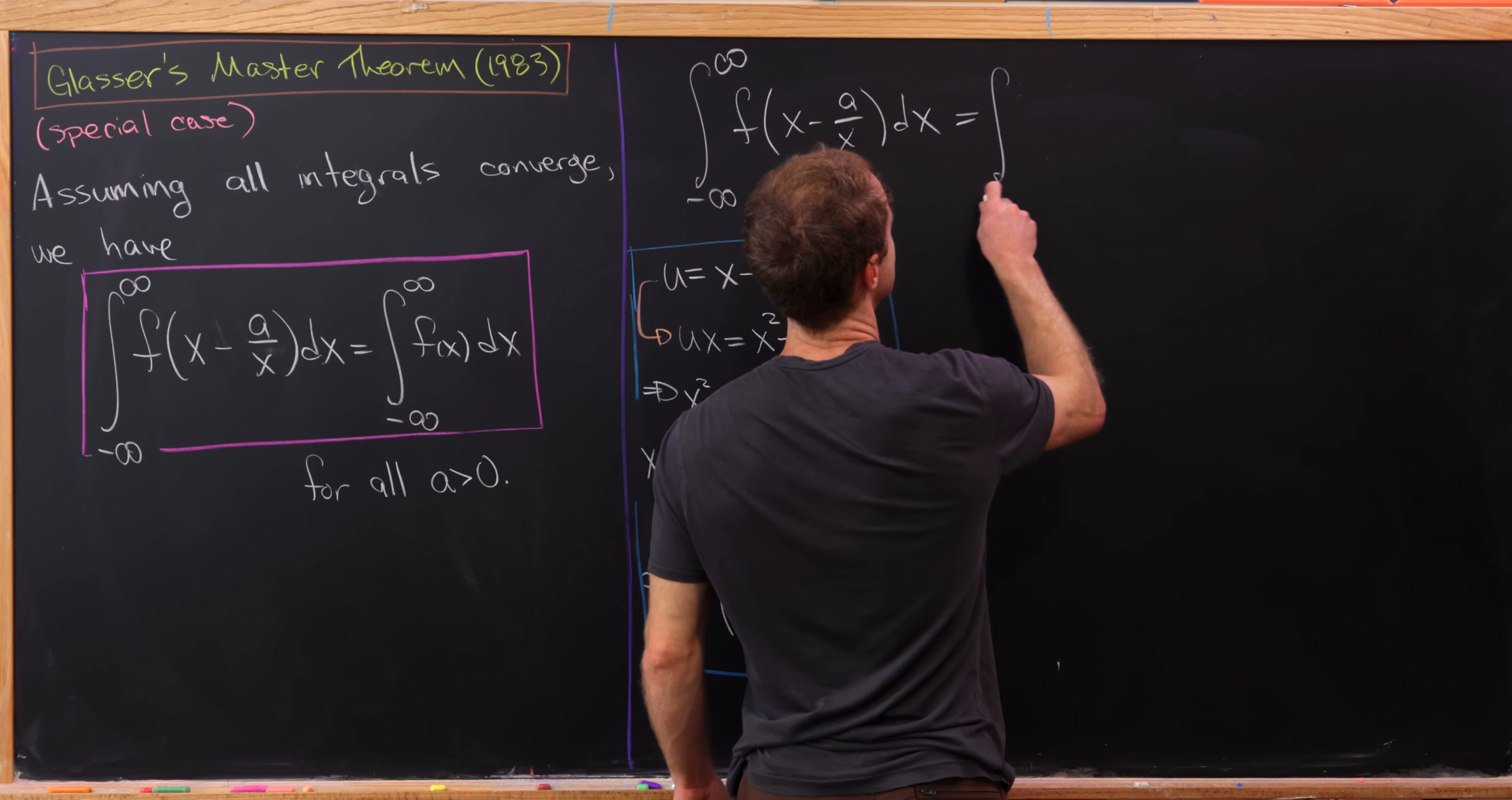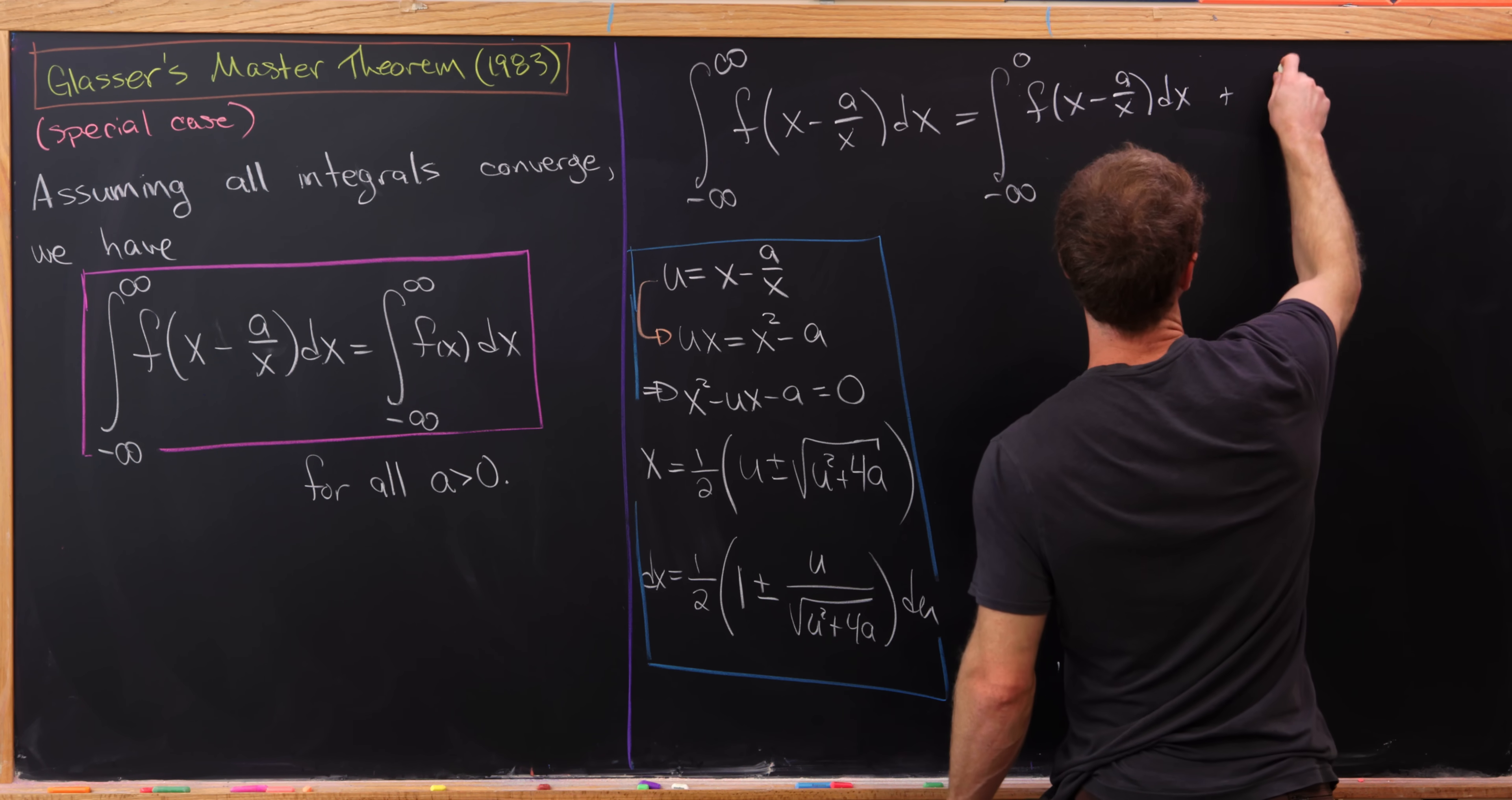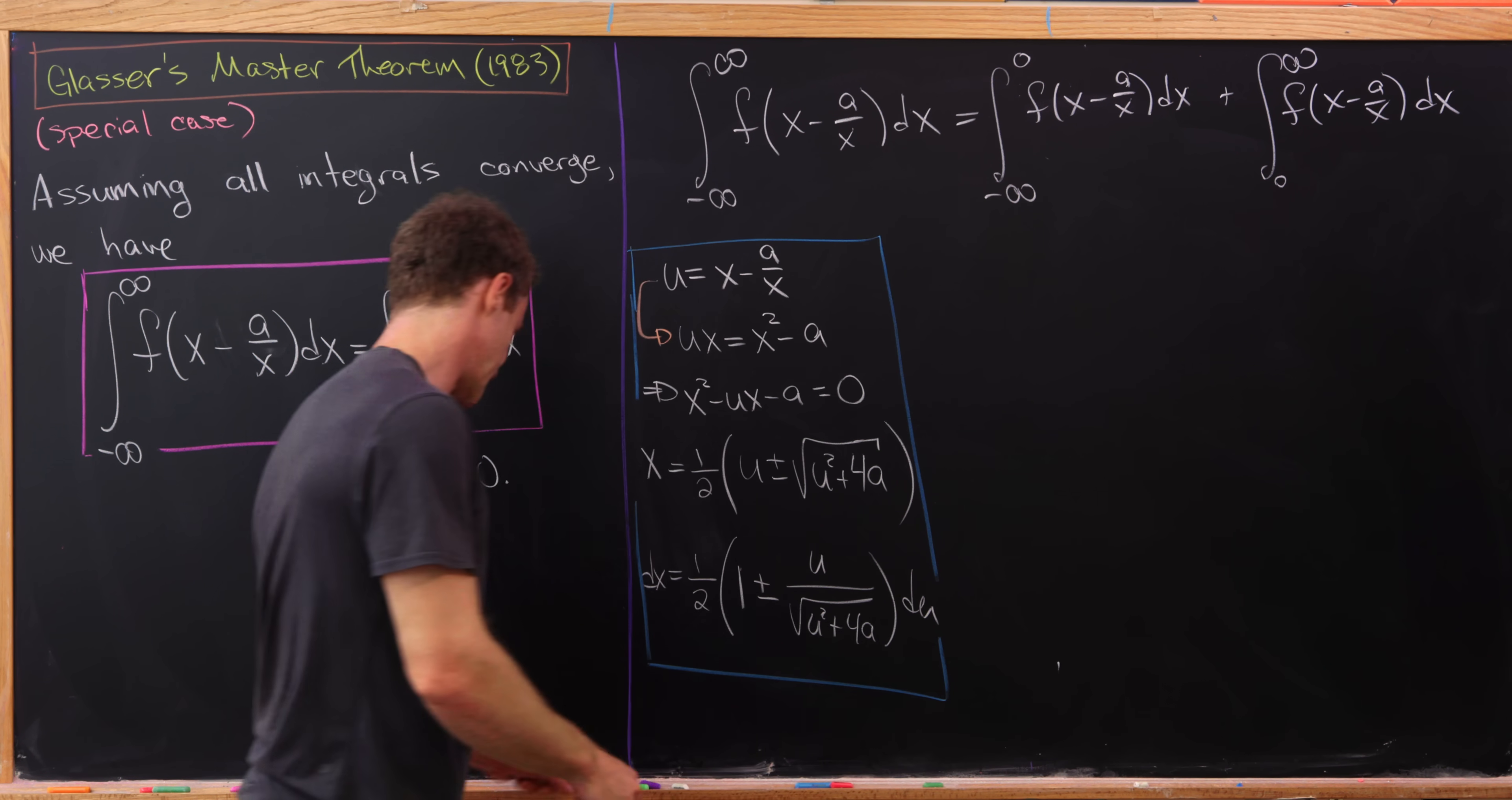So let's split this up into the integral from minus infinity to zero of f of x minus a over x dx, and then plus the integral from zero to infinity of the same thing, f of x minus a over x dx.